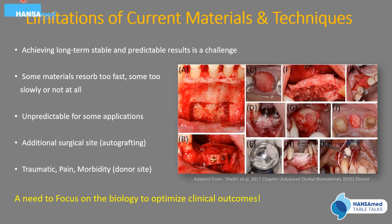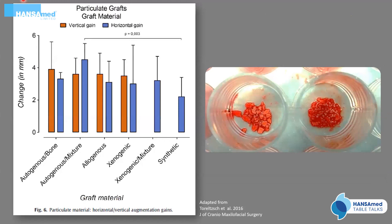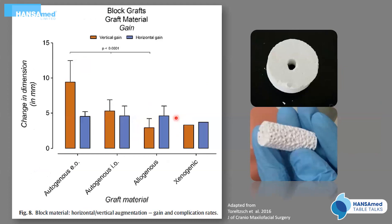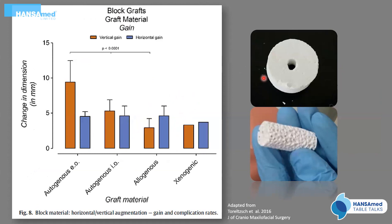There is a need to focus on biology to optimize clinical outcomes for us as clinicians. A 2016 paper compared vertical and horizontal gain between various graft materials. Interestingly, till 2016, there was no data available for vertical gain with xenogenic mixtures and synthetics. We now switch gears to alternatives to autologous bone grafts, and will quickly talk about BIOS, which is one of the components of the study we conducted using novel drugs.